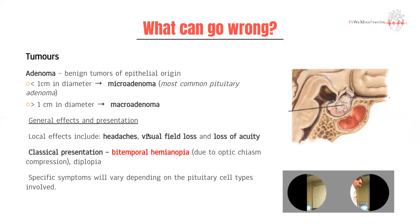Now, what can go wrong? From a clinical anatomy perspective, firstly you can have adenomas — mostly benign tumors of epithelial origin. Anything less than one centimeter is a microadenoma, which is the most common type, versus macroadenomas that are greater than one centimeter. With any intracranial mass lesion you can have headaches. Particularly, given the proximity of the sella turcica to the optic chiasm, you get vision issues — specifically bitemporal hemianopia, where you lose peripheral or lateral vision on both sides.